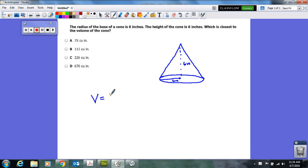For a cone, you have to multiply one third times pi r squared times the height.